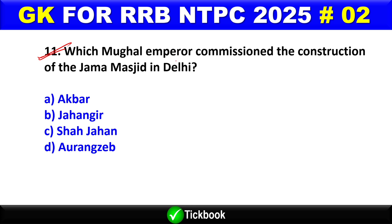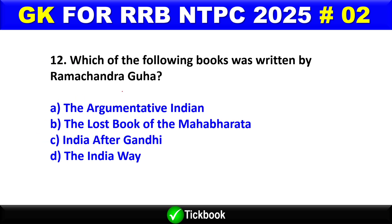Question number 11: Which Mughal emperor commissioned the construction of the Jama Masjid in Delhi? Option C is the right answer — Shah Jahan. Question number 12: Which of the following books was written by Ramachandra Guha?